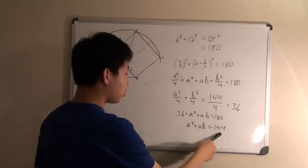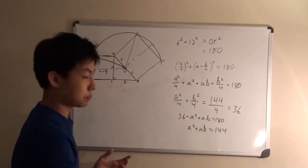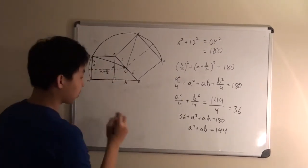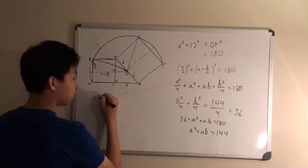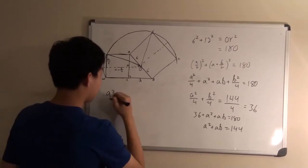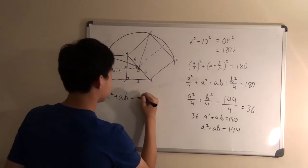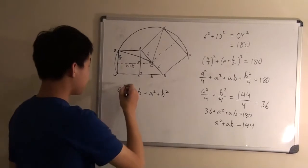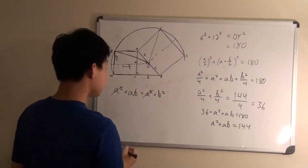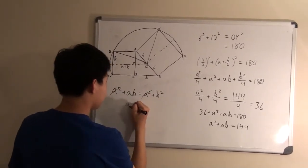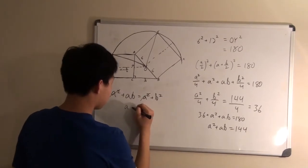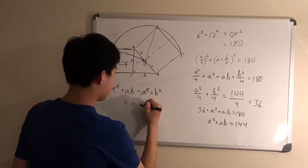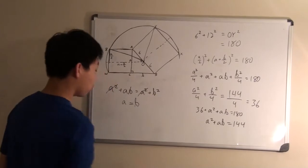But we already know that 144 is also equal to A squared plus B squared. So if we plug in A squared plus B squared for 144, we get A squared plus AB is equal to A squared plus B squared. From here we can cancel A squared on both sides, and we can also divide B on both sides, which would give us A equal to B.